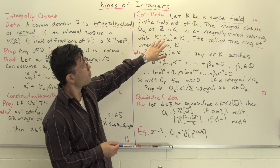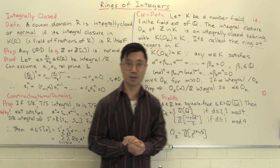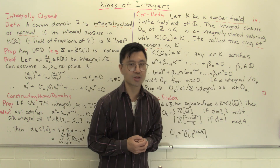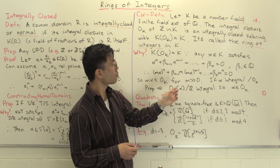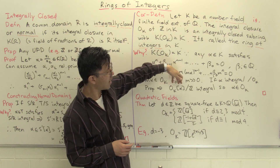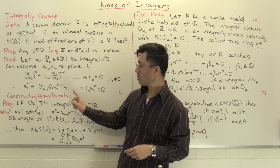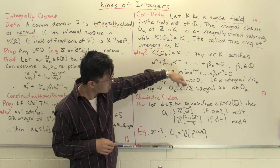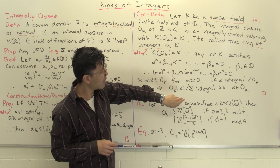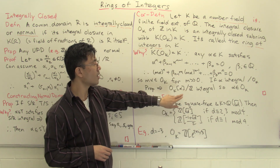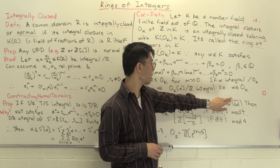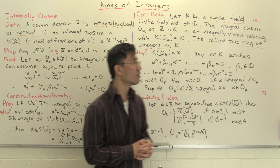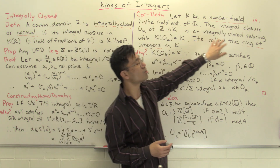The other part to check is that O_K is integrally closed. If alpha is integral over O_K, and O_K is integral over Z by definition, then by the transitivity proposition, alpha is integral over Z. So alpha lies in the integral closure of Z inside K, which is O_K by definition. This gives you a way to construct integrally closed subrings whose field of fractions is whatever number field you like.